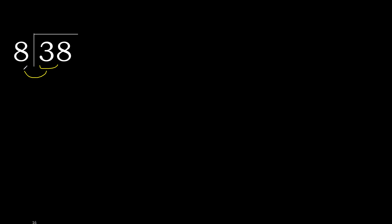38 divided by 8. 3 is less, therefore next digit. 38 is not less, therefore with 38: 8 multiplied by which number is nearest to 38 but not greater? 8 multiplied by 5 is greater. 8 multiplied by 4 is 32, which is not greater.